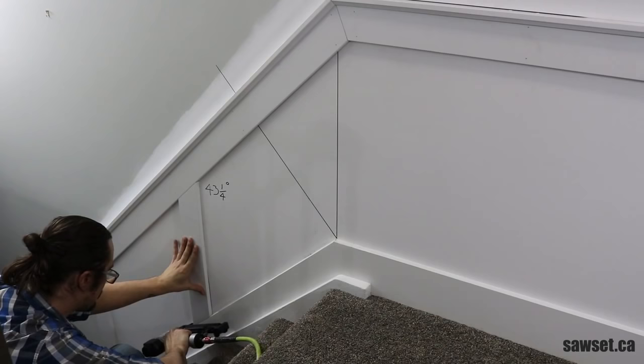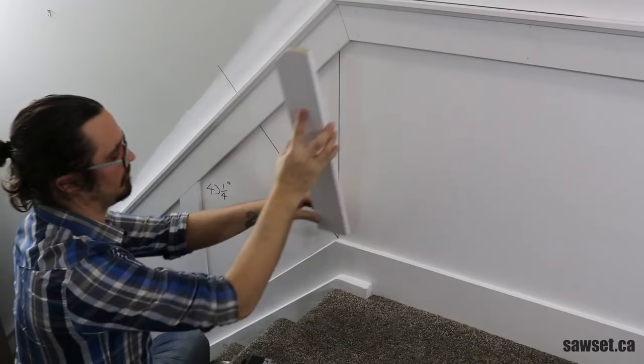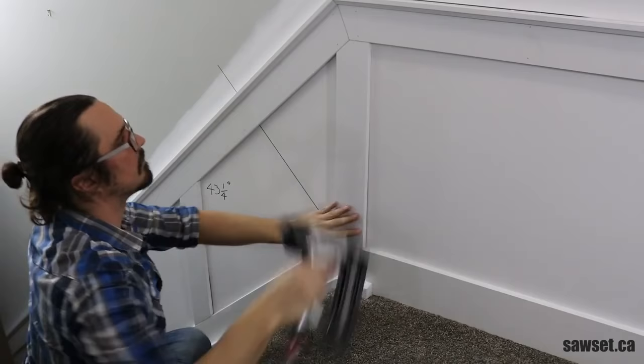One of the great things about this tool is it's capable of reading up to a quarter degree. This makes a huge difference when you're doing detailed carpentry like this. I cannot stress enough that caulking is not and never will be the answer to poorly cut miters. If you take the time and do it right with the right tools, your work will last a lifetime.